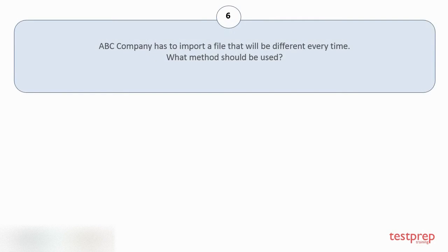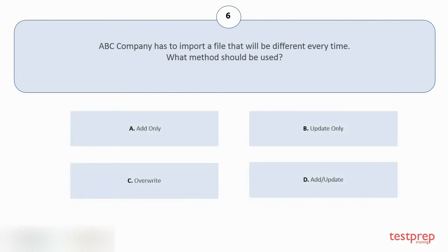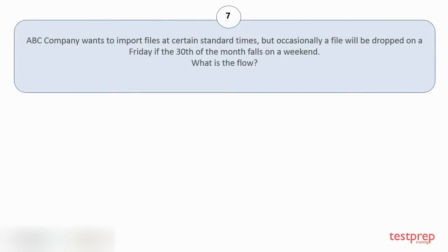Question number six: ABC Company has to import a file that will be different every time. What method should be used? Options: A) Add only. B) Update only. C) Overwrite. D) Add or update. The correct answer is option C.